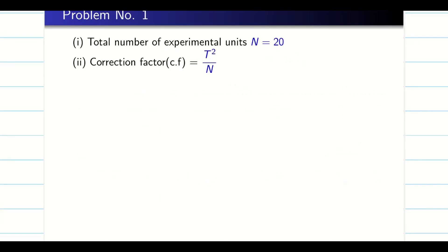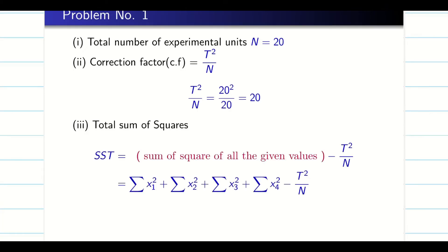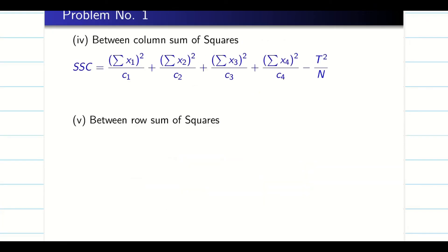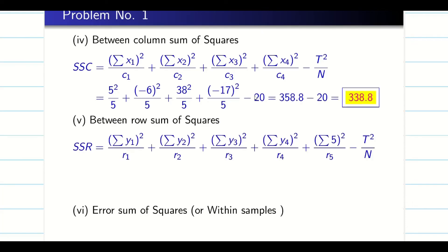Let us solve the problem. N is 20. Correction factor T squared by N is 20 squared by 20, it is 20. Total sum of squares. You go to the table. Calculated values can be copied from there. So it is going to be 574. Next, between column sum. So as I said, for column I use the notation c1, c2, c3, etc. Here all the columns will have same data, so it is going to be 5. Similarly, we are going to find row.